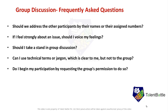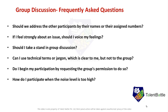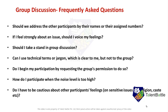Do I begin my participation by requesting the group's permission? You are not likely to get a chance to ask for permission and it may appear weak. How do I participate when the noise level is too high? Try to identify the most powerful speaker in the group, note down the points they are making, and the moment the noise reduces a little, enter by supporting that powerful speaker — you will have made a strong ally. Also, be cautious about others' feelings on sensitive issues like religion or caste, as insensitivity displays a lack of maturity and will act against you.